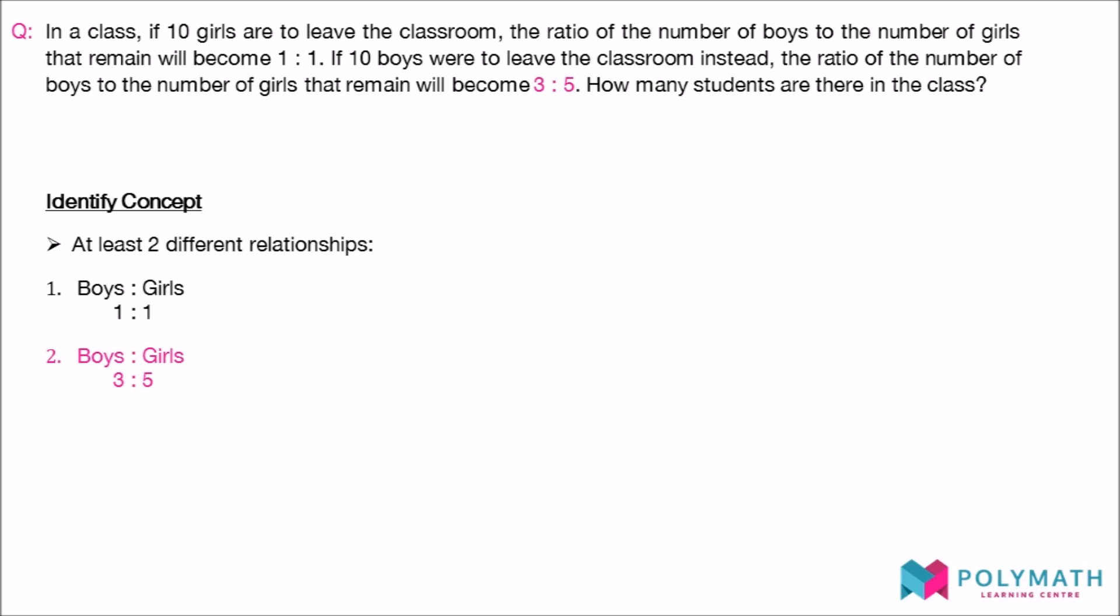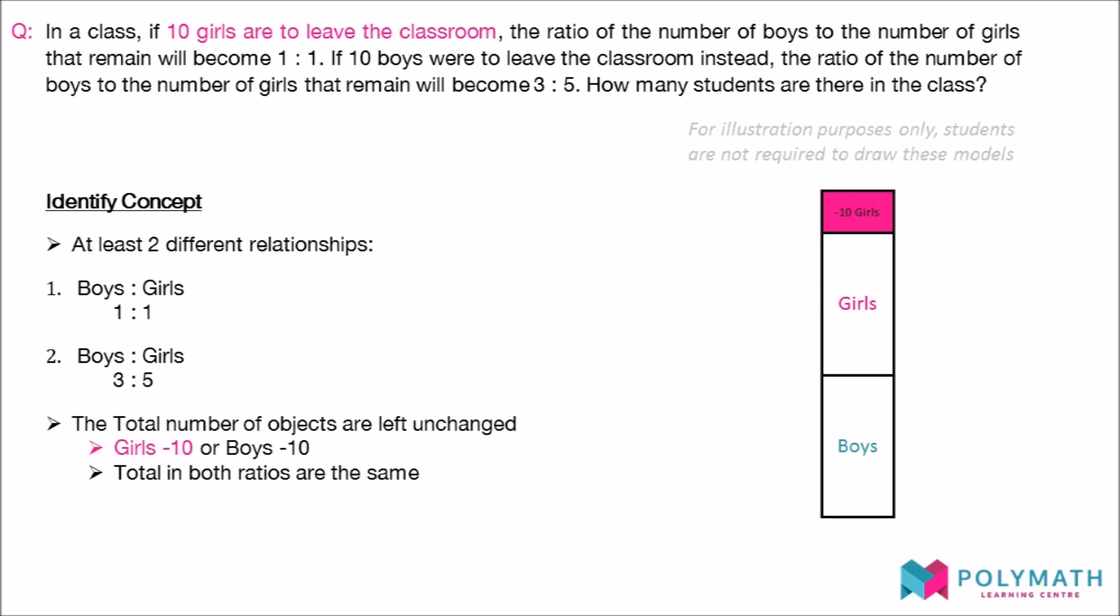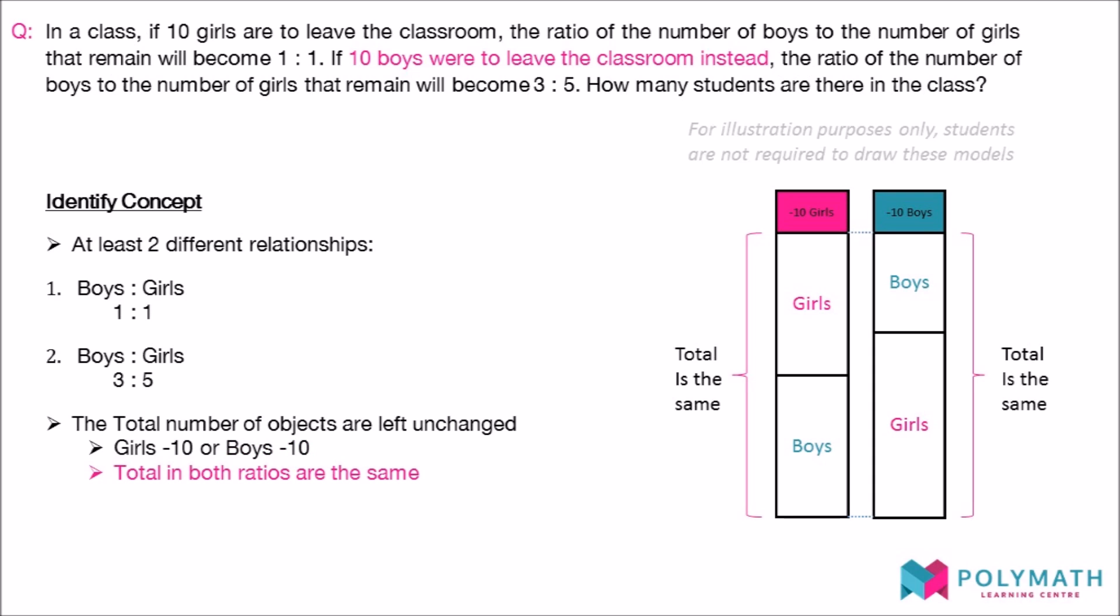Most importantly, as the name of the concept suggests, we observe that in both ratios, the total should have remained the same. In both ratios, the number of students is 10 less than the actual number of students in the class. The only difference is that the missing students are of different genders. However, if you sum the number of boys and girls in the two scenarios, the total should be the same.